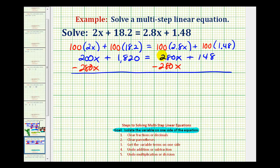Notice here we do have zero now, and now let's go ahead and simplify. We're going to have negative 80x plus 1820 equals 148.